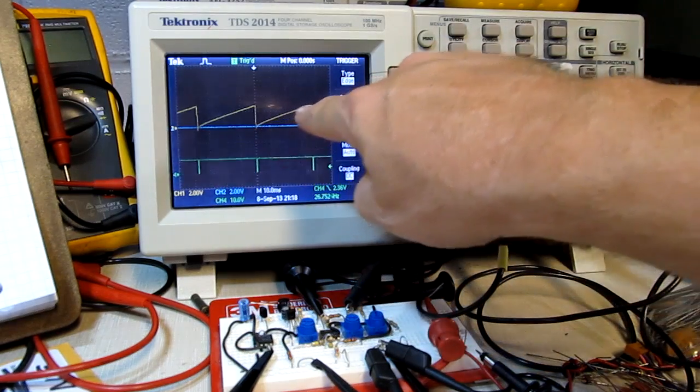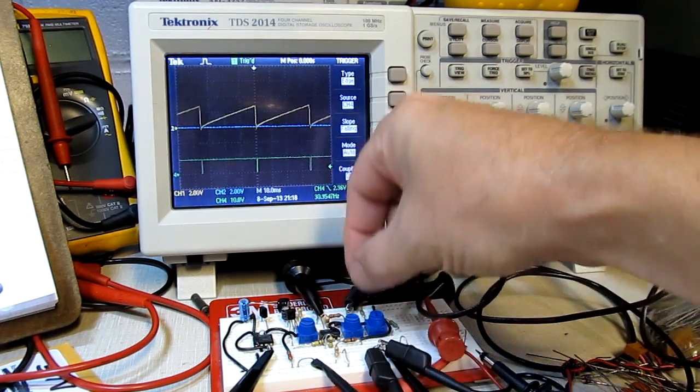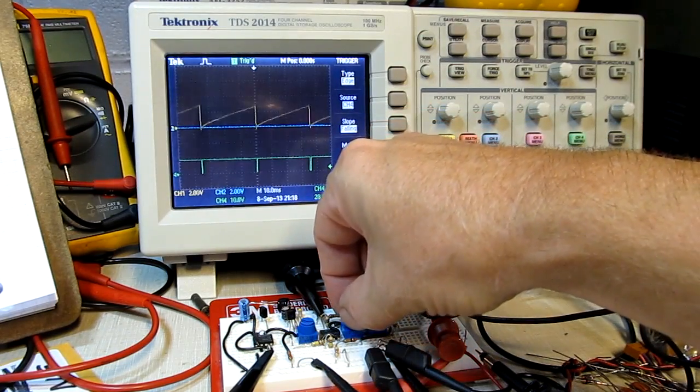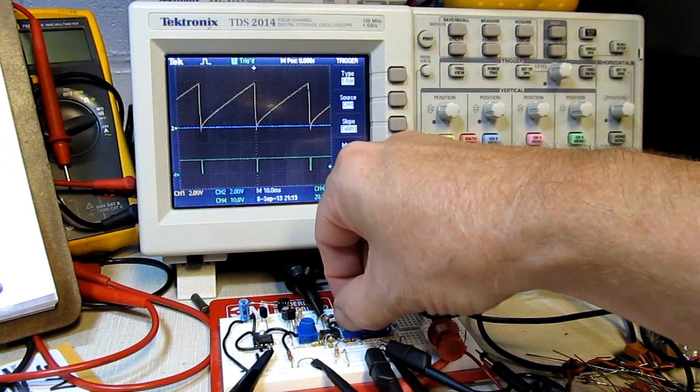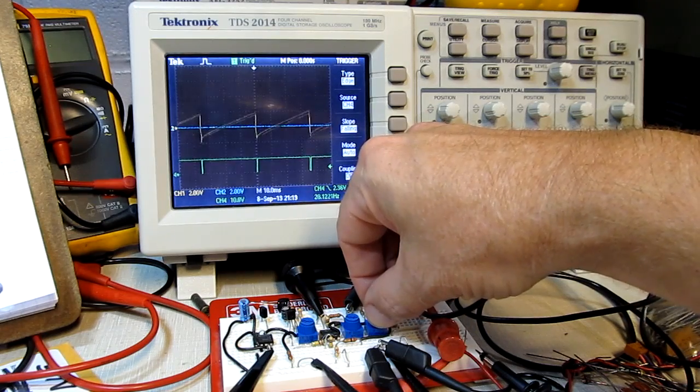Basically a circuit that generates a ramp voltage where we can adjust the speed of that ramp, the gain or magnitude of that ramp, and the DC offset of that ramp voltage.